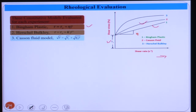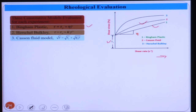The second model is the Casson fluid, represented as √τ = √τ_c + √(η_c · γ̇), where τ is the applied shear stress, γ̇ is the shear rate, τ_c is the yield stress, and η_c is the plastic viscosity.